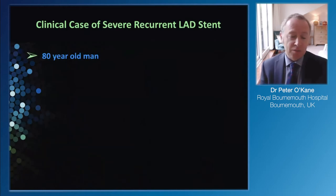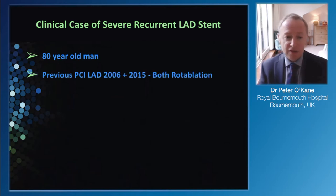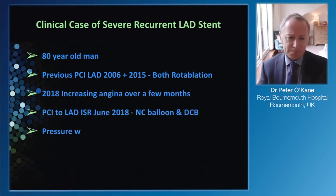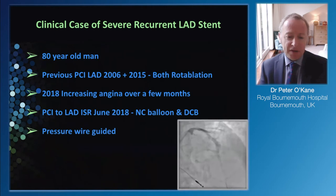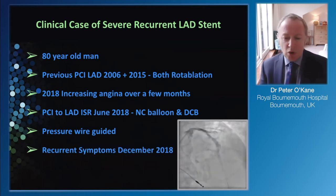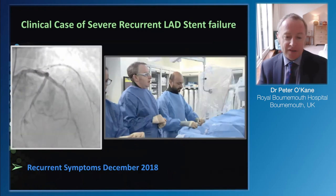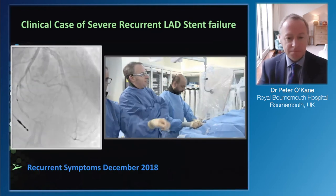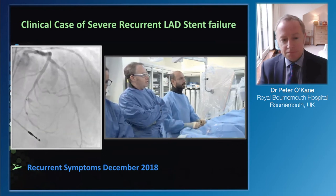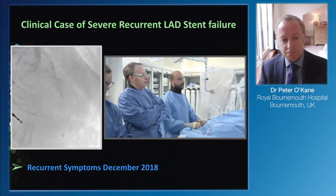I'm going to illustrate this with a case of an 80-year-old gentleman previously treated in 2015 with rotational atherectomy to the LAD, who re-presented with angina in 2018. He had PCI to the LAD - that's the final result in June 2018, pressure-wire guided. Not great, but optimal at the time. He comes back with further symptoms in December 2018. As predicted, the LAD has re-narrowed at the point where we last treated with drug-coated balloon six months ago.